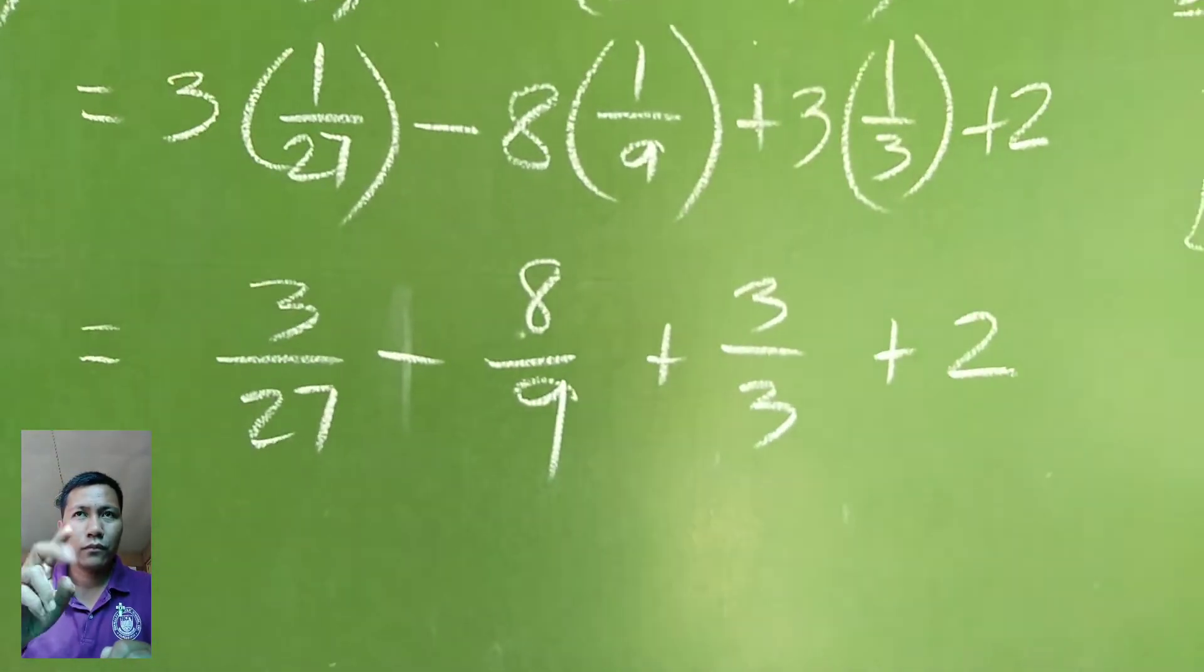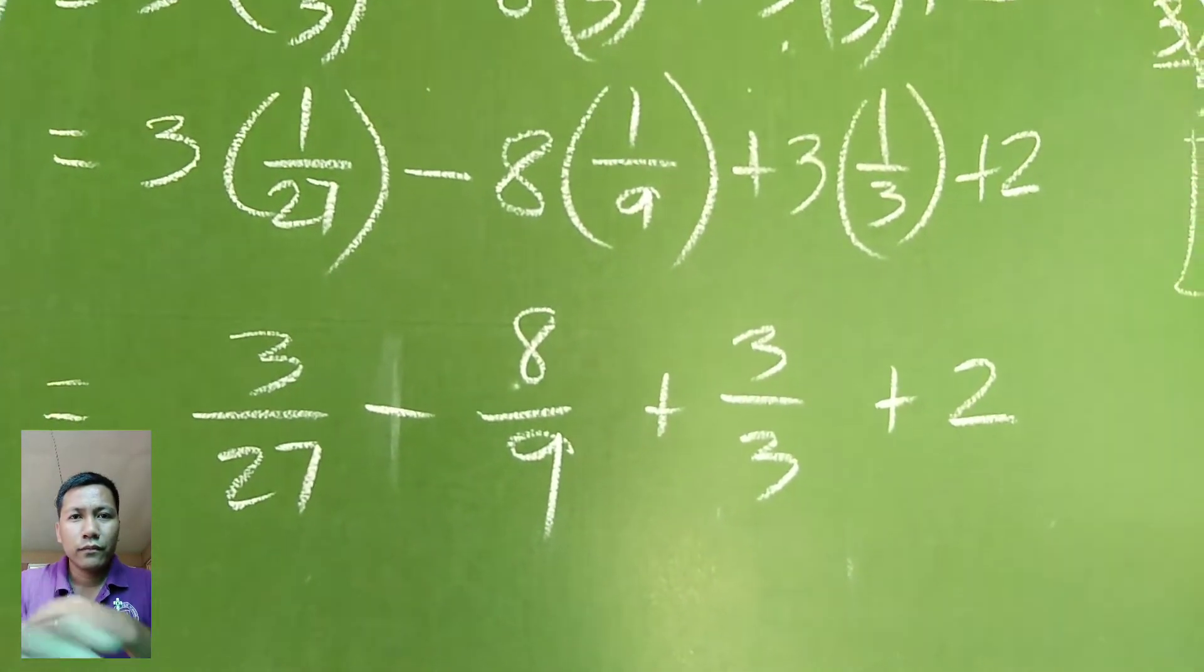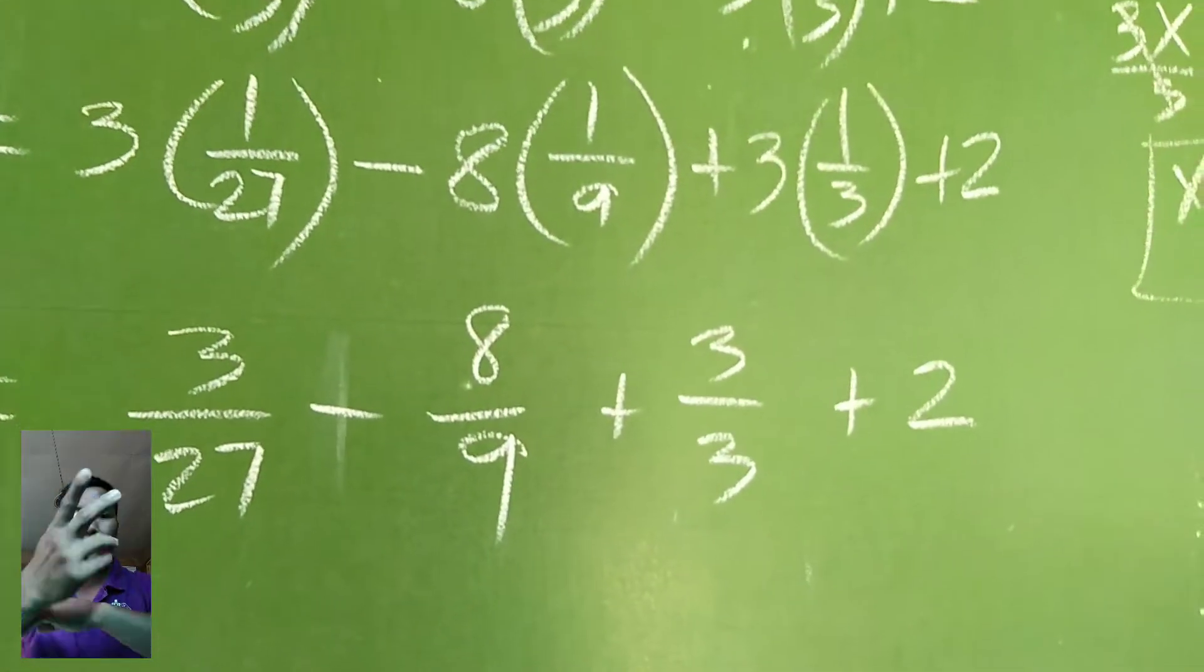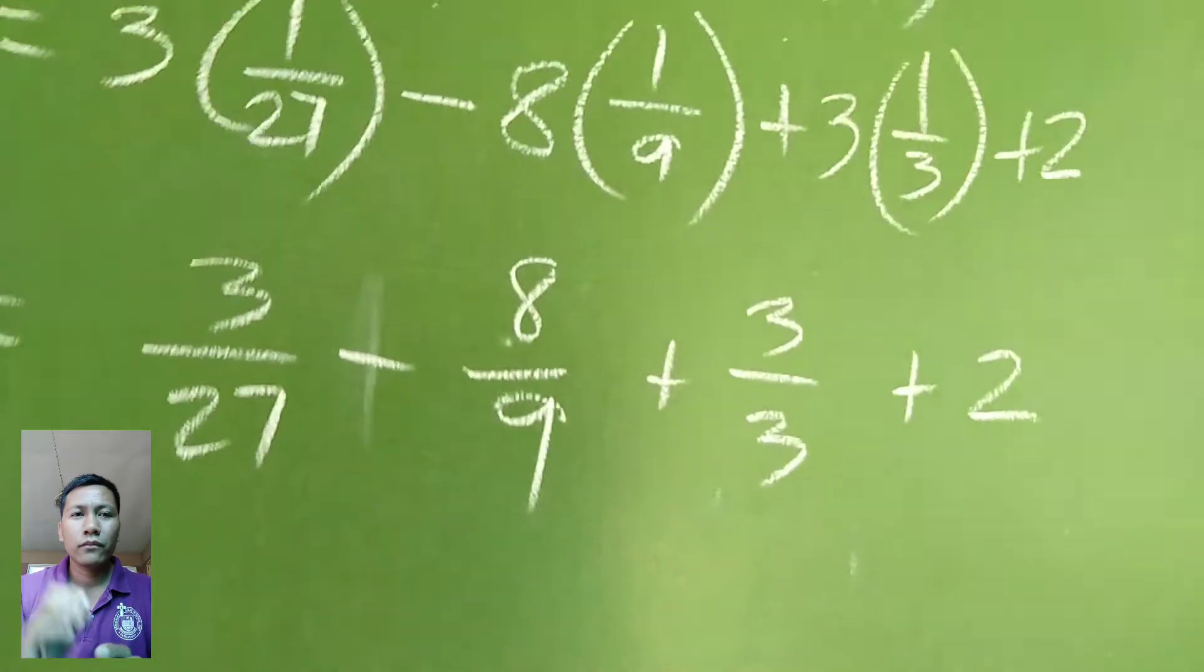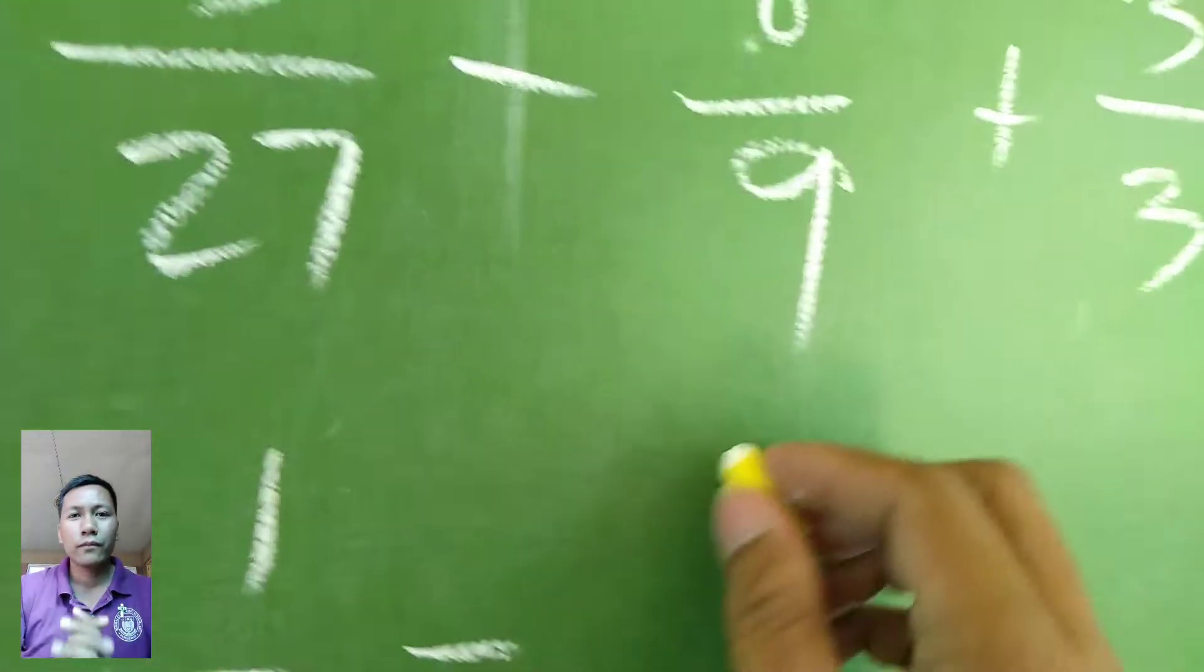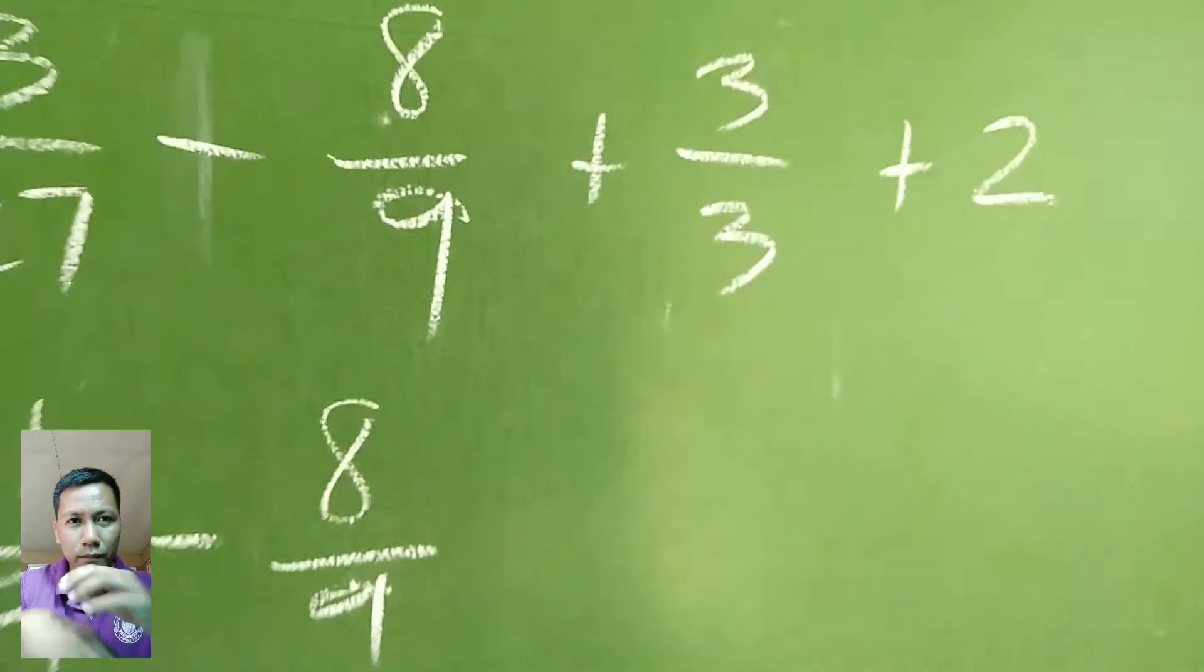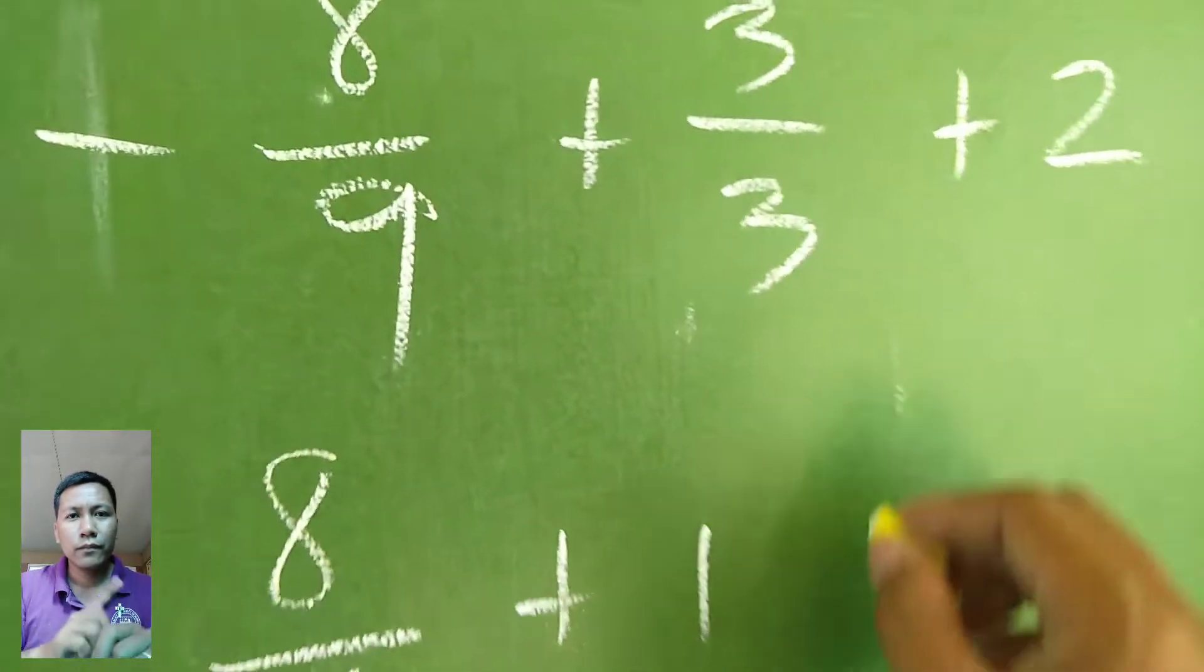What's next? Yes. We have whole number multiplied by the numerators. We have 3 over 27 minus 8 over 9 plus 3 over 3 and then plus 2. Now, most of you will just do LCD. But if you see something that can be reduced to lowest terms, do it right away. It's better to solve with smaller numbers. 3 over 27 can be reduced to 1 over 9.